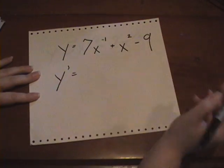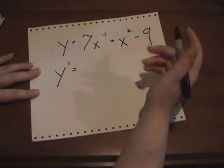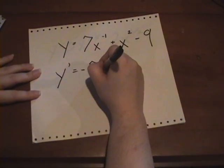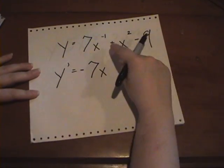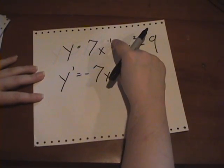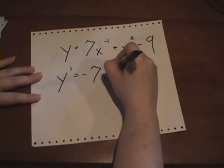Take the derivative. You have 7 times a negative 1. So it's negative 7. And then you have negative 1 minus 1, which is just negative 2.